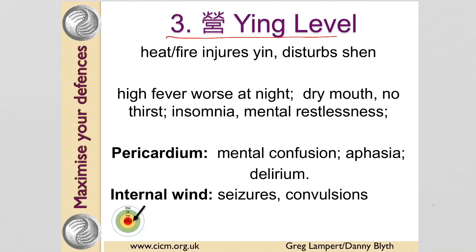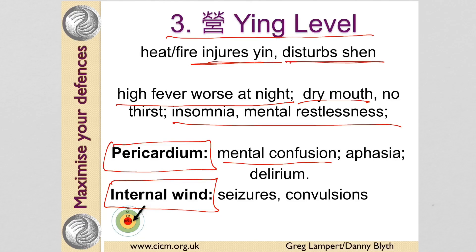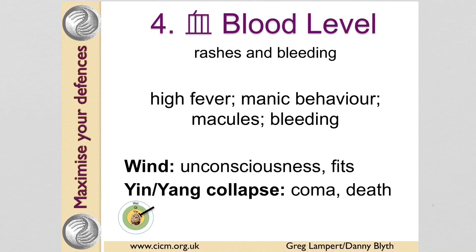Penetrating to the Ying level, we start to see injury to the yin and fluids and a disturbed Shen. We get high fever that's worse at night, dryness, insomnia, and mental restlessness — this stage can become dangerous. The pathogen can penetrate the pericardium or create internal wind. At the blood level we see rashes and very high fever, which appears to be what we're seeing in some of the young children who are getting it.